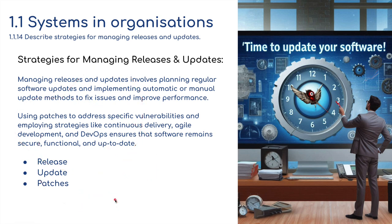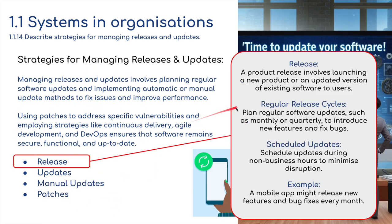Let's look at these key points. A product release involves launching a new product or an updated version of existing software to users. If you've got a smartphone, you'll know that periodically you get a message saying this software needs updating, or some apps you've installed will require updating. There are regular release cycles — we plan regular software updates, such as monthly or quarterly, to introduce new features and bug fixes. You'll see this a lot with iOS on your phone.